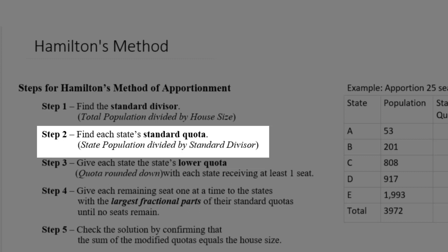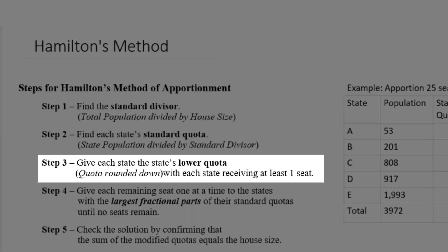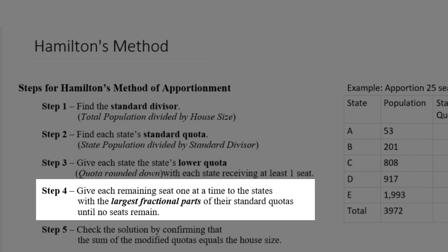But that's where things start to change depending on the apportionment method. For Hamilton's method, step three is going to be to find the state's lower quota, which just means rounding the standard quota down to a whole number. Step four is where we hand out the fractional parts — if there are seats left over after handing out seats based on the lower quota, we give those extra seats to the states with the largest fractional part. This is unique to Hamilton's method.